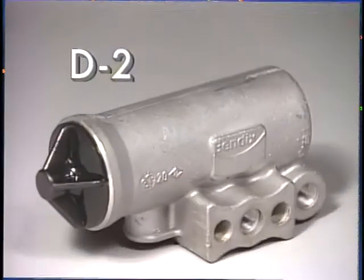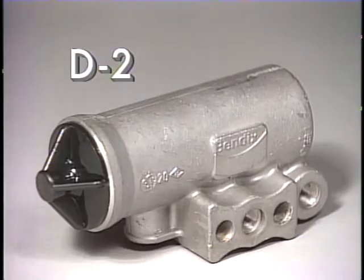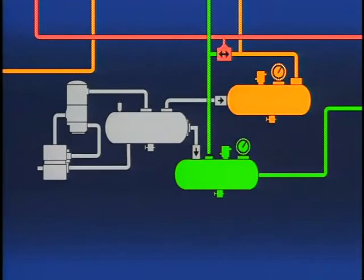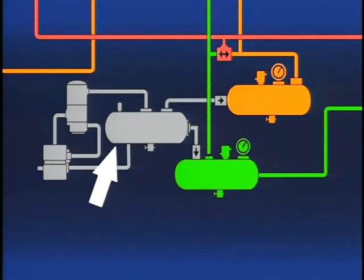Next, let's look at the Bendix D2 governor and how it interacts with the compressor and supply reservoir, and later the air dryer. The governor is used to control the compressor and thereby regulate air pressure in the supply reservoir.